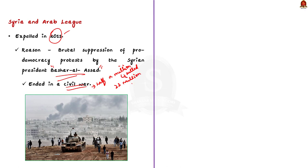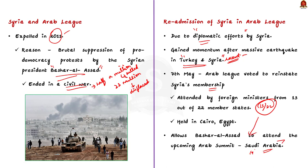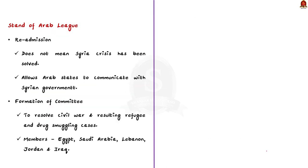The Arab League's decision to reinstate Syria's membership gained momentum after the massive earthquake that affected Turkey and Syria recently. On 7th May, the Arab League voted to reinstate Syria's membership at a closed-door meeting attended by foreign ministers from 13 out of 22 member states, held in Cairo, Egypt. This ruling will allow Bashar al-Assad to attend the upcoming Arab Summit in Saudi Arabia on 19th May. Arab League Secretary-General Ahmed Aboul Gheit said that Syria's readmission does not mean the Syria crisis has been solved, but it allows Arab states to communicate with the Syrian government. A committee was formed with Egypt, Saudi Arabia, Lebanon, Jordan and Iraq to resolve the civil war and resulting refugee and drug smuggling issues.